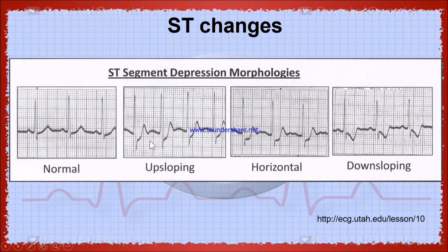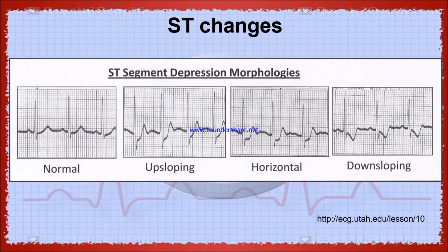When there is a lack of blood supply, ST segment elevation will be present in the earlier stages. In the later stages, when there is a downslope ST segment change, it may occur due to hypertrophy of the ventricle or if the patient is taking digoxin. Horizontal downslope depression of the ST segment, if it is greater than 2 mm, is a prognostic finding of myocardial ischemia or injury.